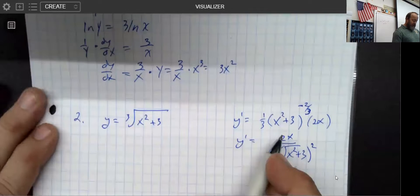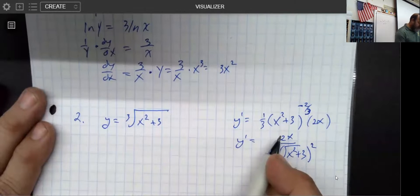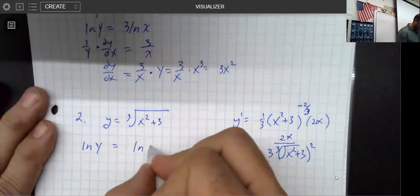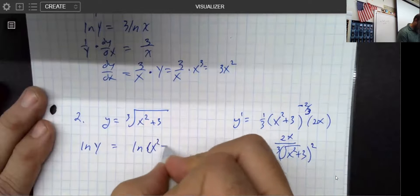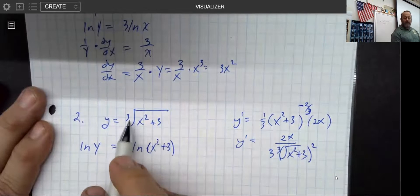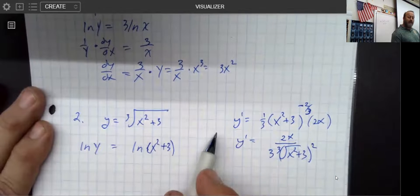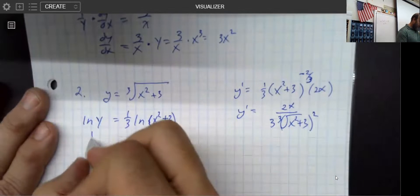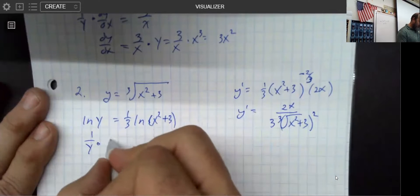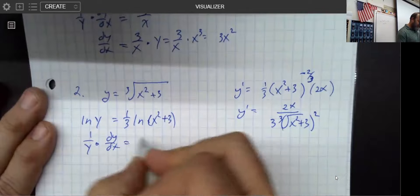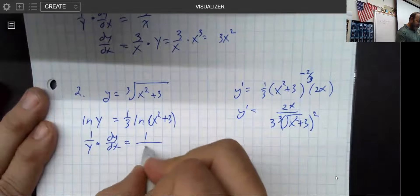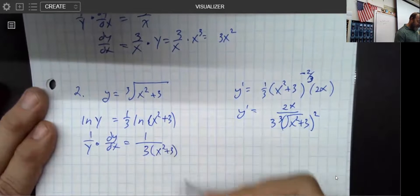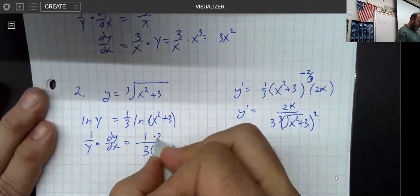So what I'm going to do is I'm going to take the natural log of both sides. So now if I took the natural log of both sides, what I get to do immediately is instead of thinking of this as a cube root, I'm thinking about it as a one-third power, which allows me to drop that in front. So I have 1 over what's inside times the derivative of what's inside. Again, 1 over what's inside times the derivative of what's inside.